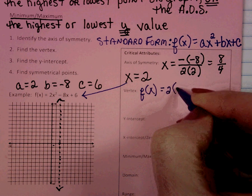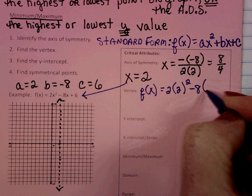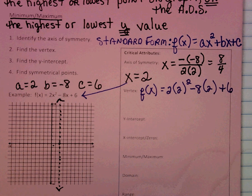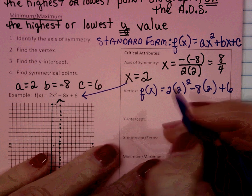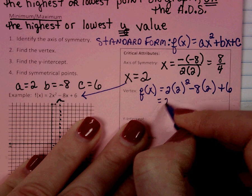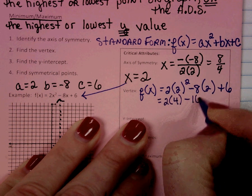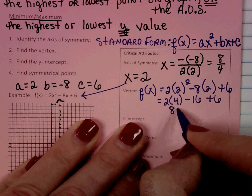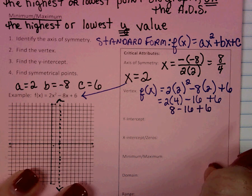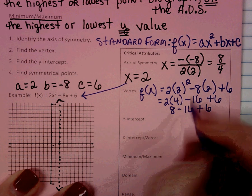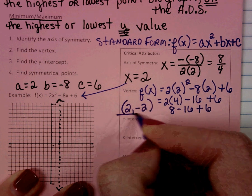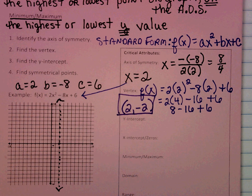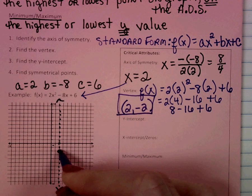The vertex is going to be a point. Your calculator could come in handy here — if you know the axis of symmetry is at x equals 2, you can look at your table of values to find the y-value. Calculating: 2(2)² minus 8(2) plus 6 gives 8 minus 16 plus 6, which is negative 2. So our y-value is negative 2 and our x-value is 2, making the vertex (2, negative 2).